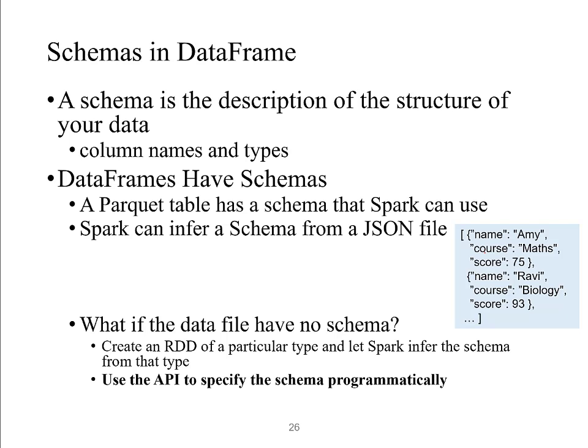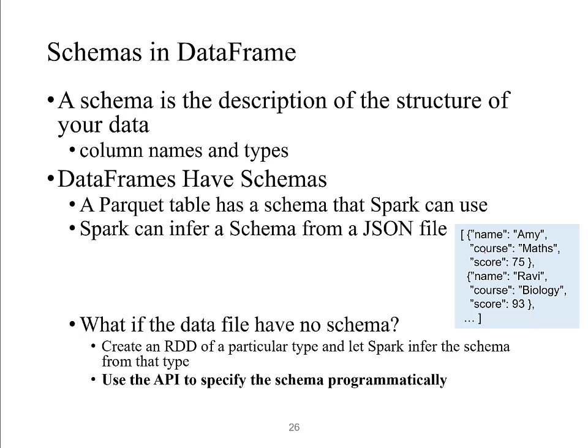To summarize: Spark SQL starts from a SQL query or data frame, generates a logical plan, uses Catalyst to do logical optimization and generate different physical plans, selects the best one based on the cost model, and finally executes the plan. Now let's come back to data frames. The concept of schema: schema is the description of the structure of your data in the data frame. It contains two things — column names and data types in each column. A data frame must have a schema.